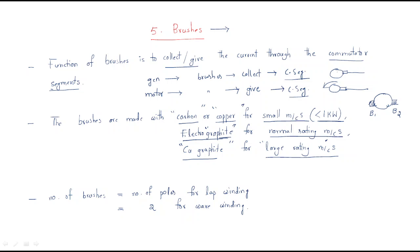To summarize brush materials: carbon or copper is for small rating machines, electro-graphite is for normal rating machines, and copper-graphite is for large rating machines. Graphite material is useful for medium as well as large rating machines.